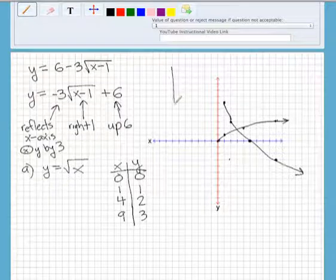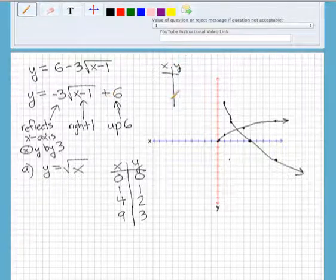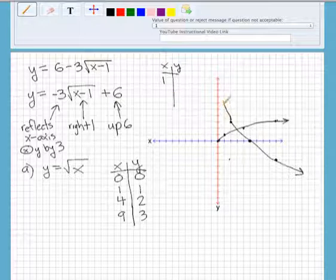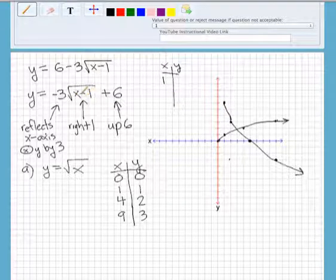What I would do is plug in a chart here, make an XY chart, and plug in, I'll plug in 1 to make sure that we get 6. So we plug in 1. We'll get 1 minus 1 is 0. Square root of 0 is 0. Times negative 3 is still 0. Plus 6 is 6.